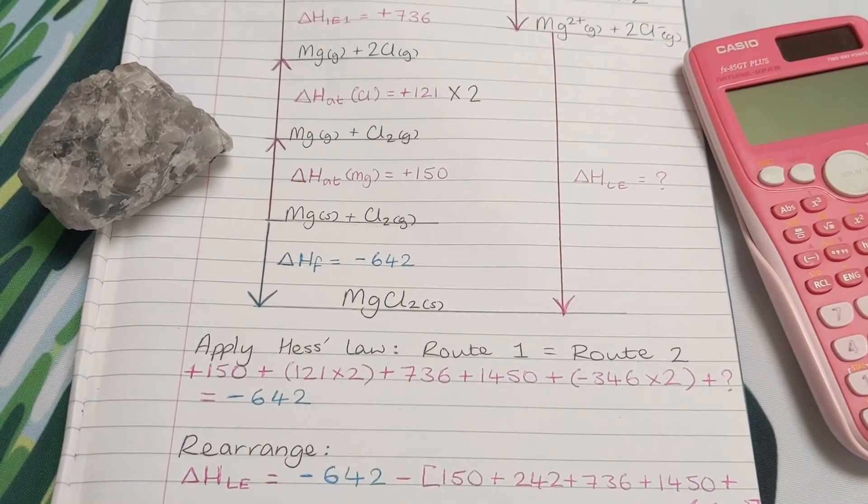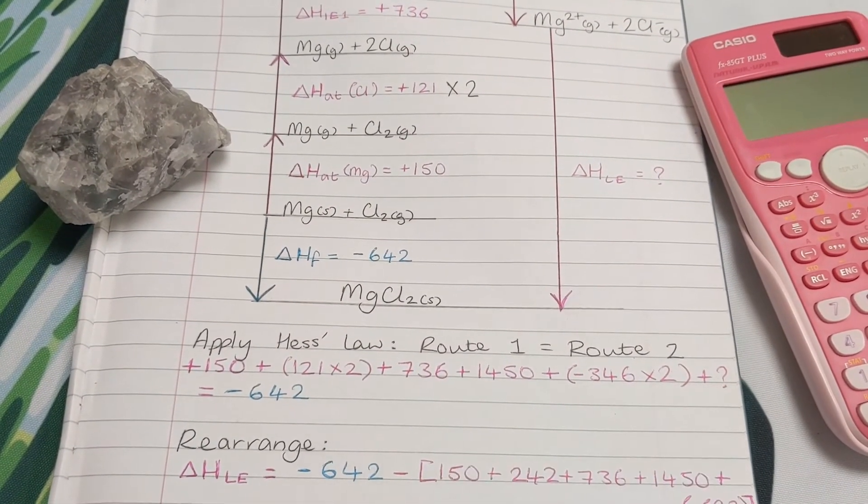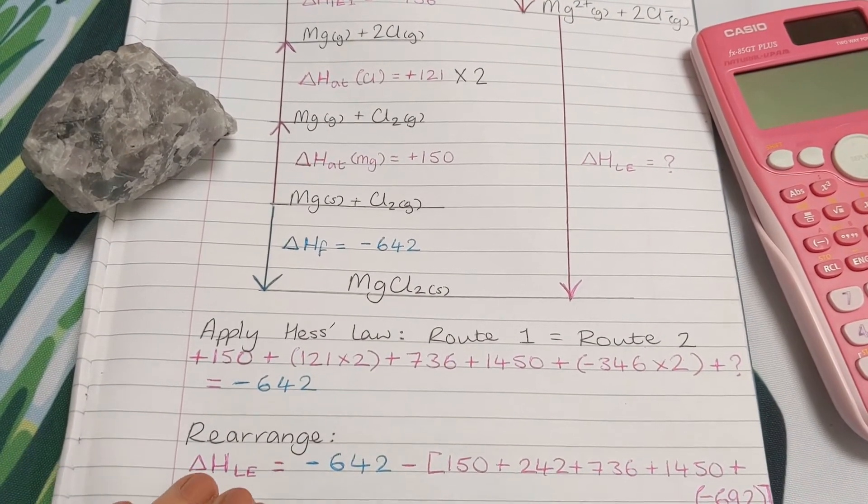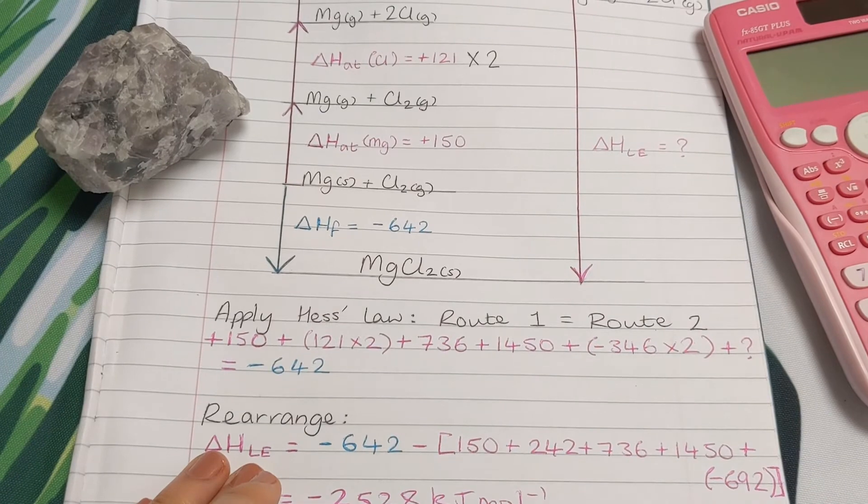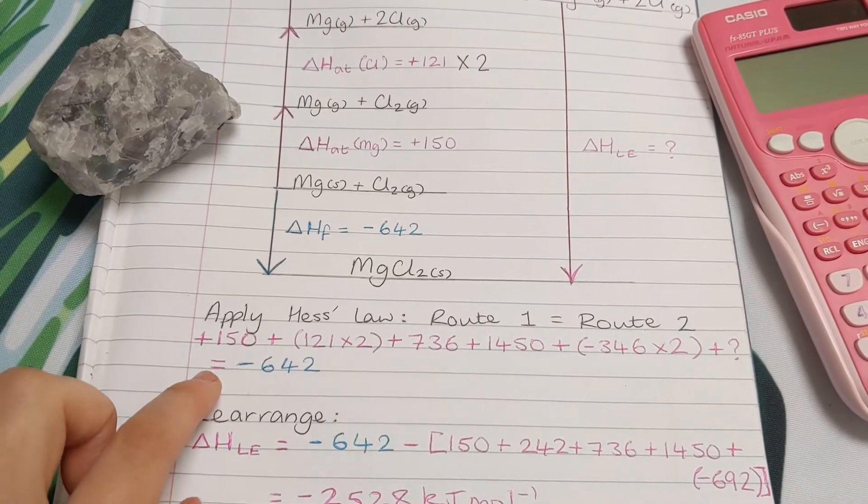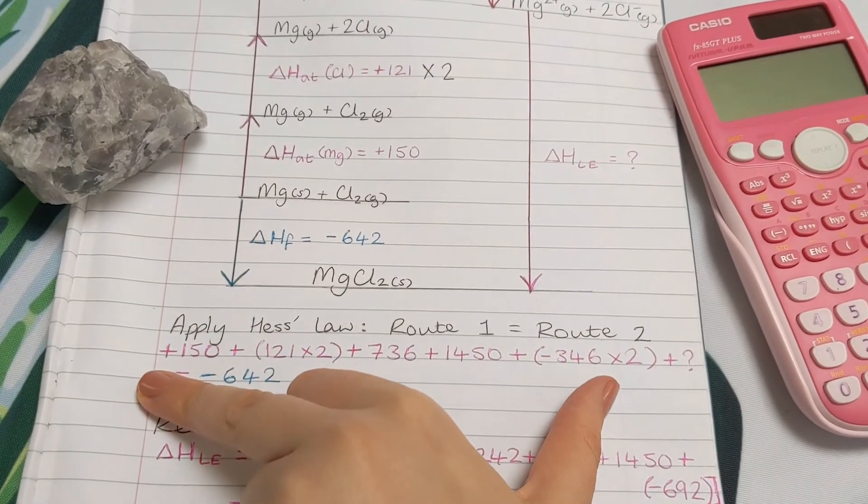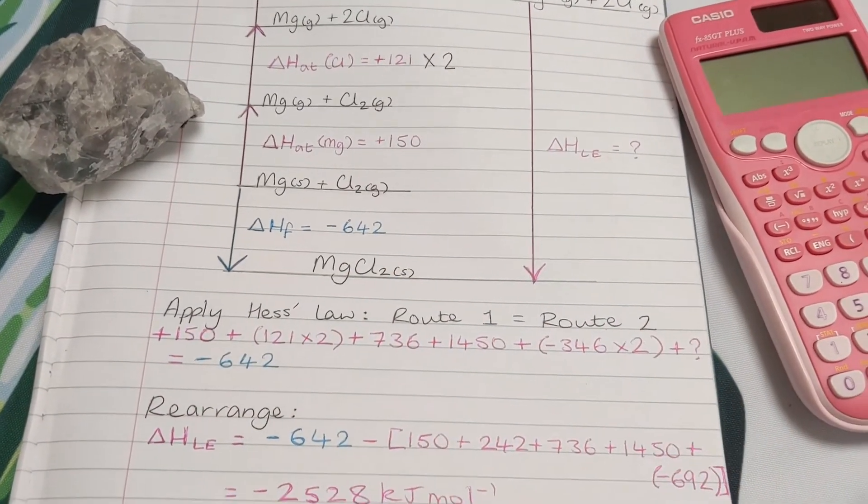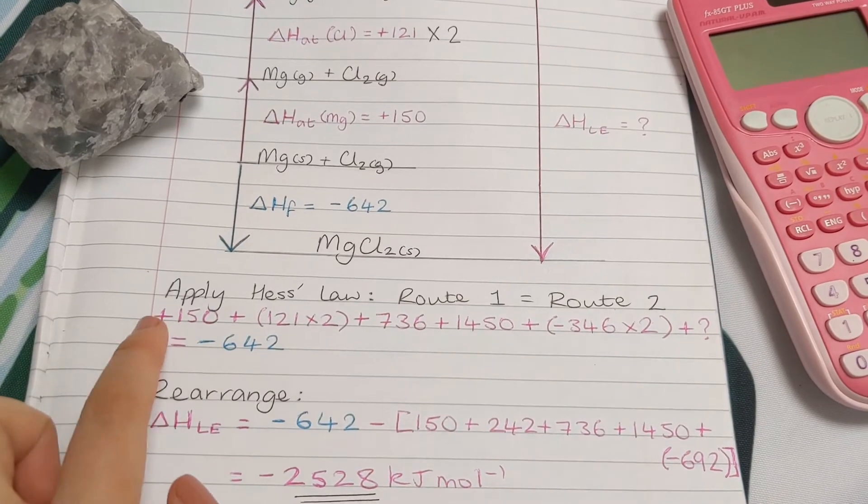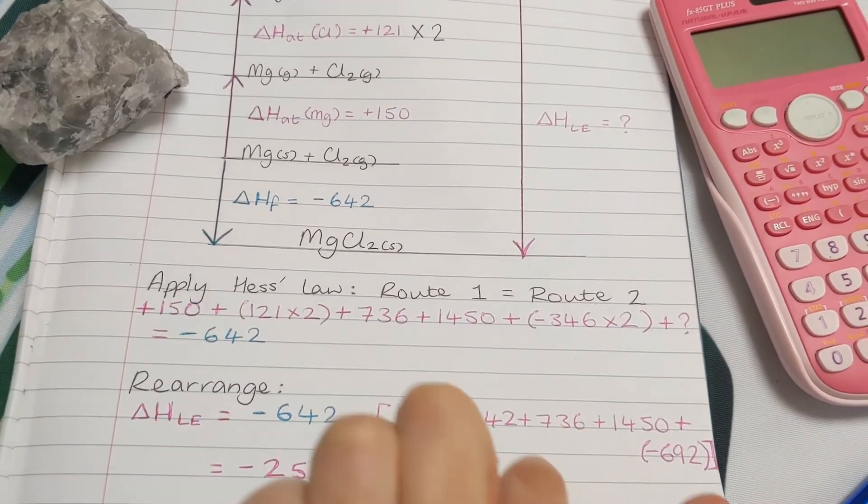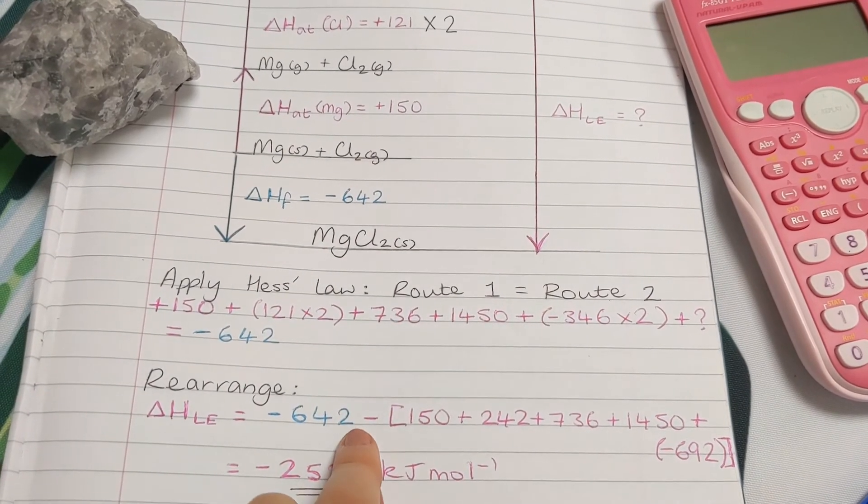Now we need to rearrange in terms of the lattice enthalpy, which is what we want to find out. So we put lattice enthalpy on the left hand side at the start, we write it equal to this. Then we move this big term here over to the right hand side. It's positive at the moment. Change sides, change signs, so we stick a negative in front.